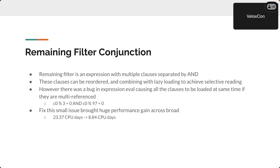There was a bug: when an expression is multi-referenced, there was a bug that caused it to evaluate eagerly. For example, if you have C1 mod 3 equals 0 and C0 mod 97 equals 0, because it was multi-referenced, we eagerly evaluated C0 — meaning we'd end up reading every row. In reality, we could reorder to evaluate C0 mod 97 first, so the second condition only needs to read about 1% of rows. Fixing this bug brought CPU time down by about three times.